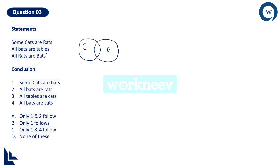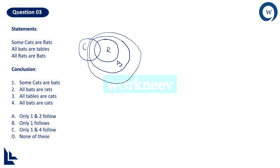All rats are bats: rat has to be the inner circle and bat the outer circle. All bats are tables: bat has to be the inner circle and table the outer circle. Now let us see the conclusions. Some cats are bats — is it correct? Yes, there is a common area between cat and bat, so that conclusion is definitely true. Now let us check whether conclusions 2 and 4 are correct so I can determine the final answer.